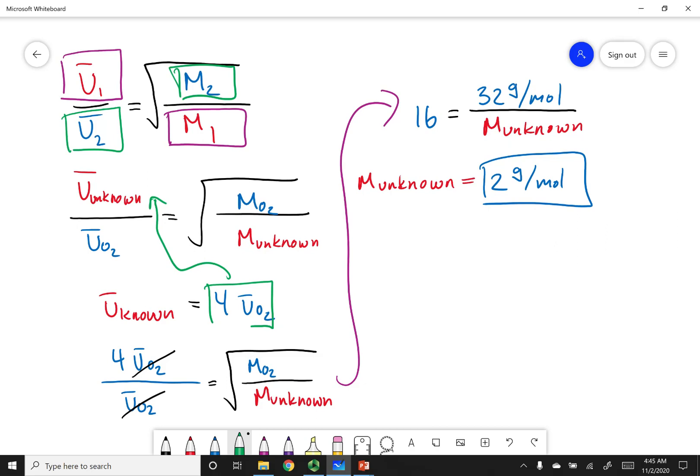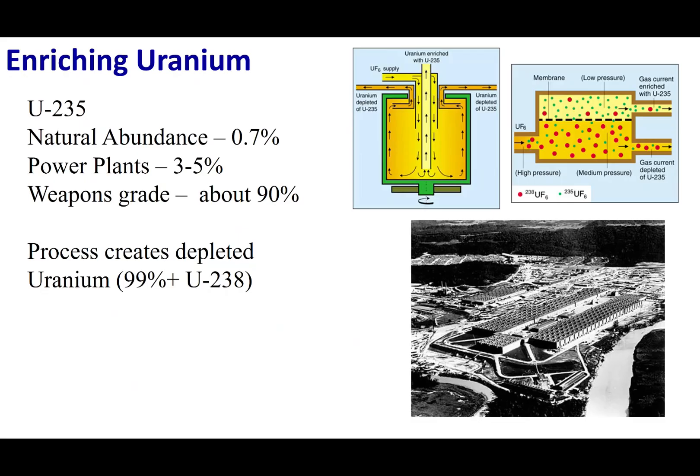All right, gentle people, let's take a little aside and talk about some practical uses for gas diffusion and effusion. One way this is employed is the enrichment of uranium for nuclear fuels. If you were to go out and mine uranium, what you would find is there are two very common isotopes, uranium-235 and uranium-238.